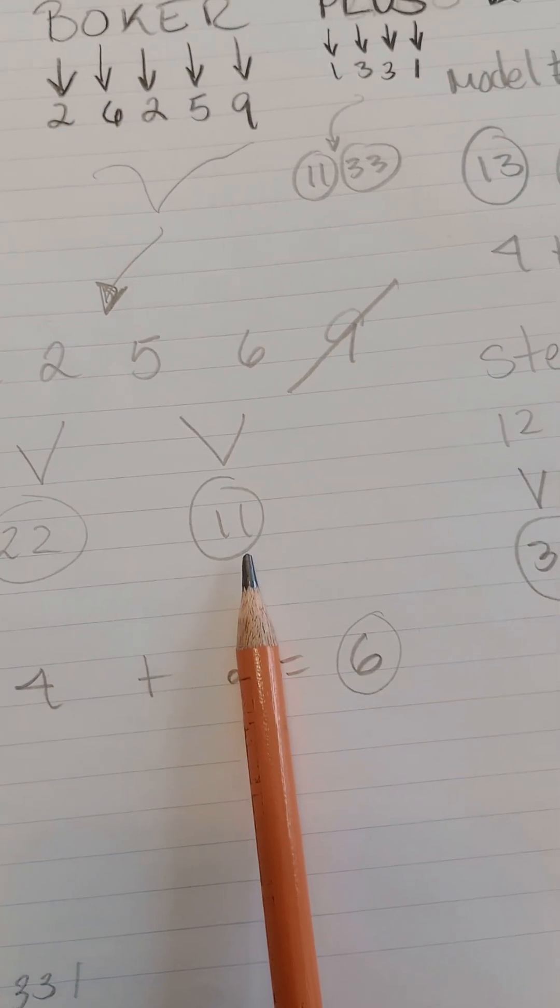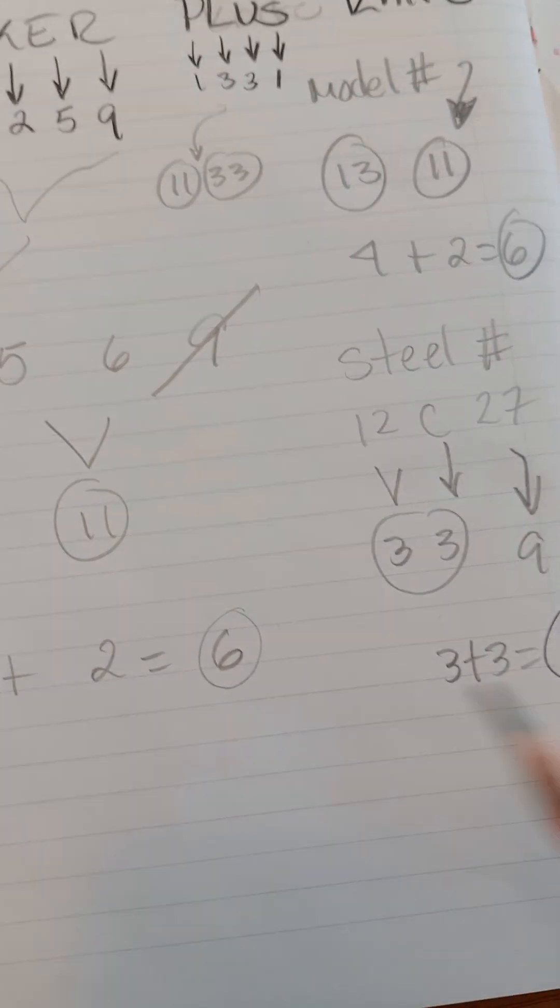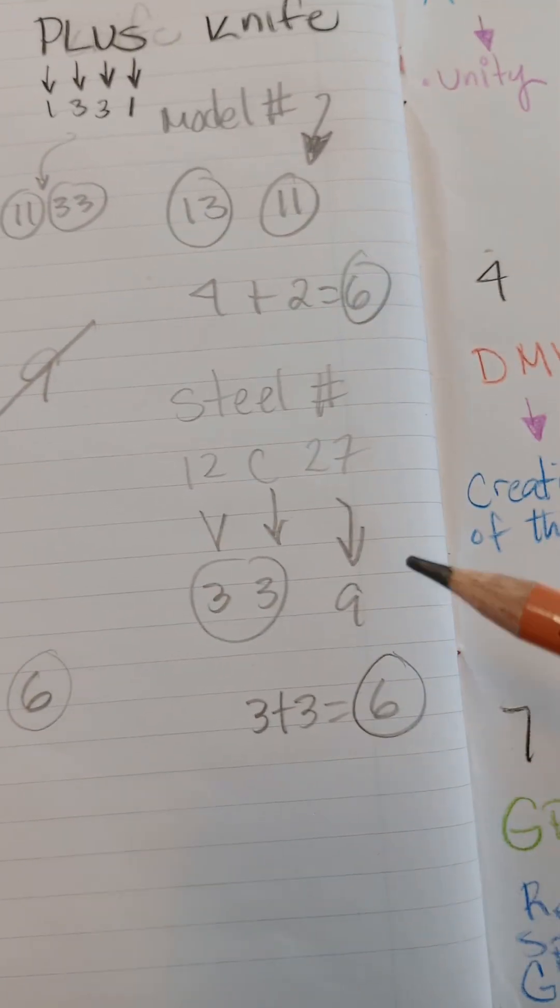If you add those two numbers up, 2 and 2 is 4. That's going to be a 2. 1 and 1 is 2. That's a 6. So they have one 6 there, right?